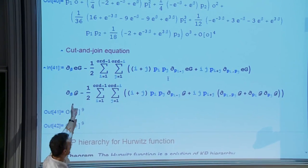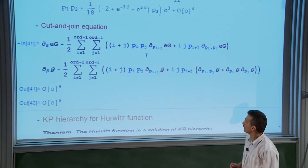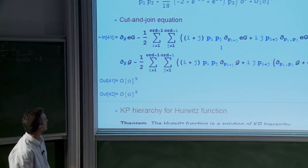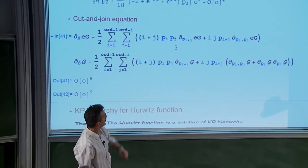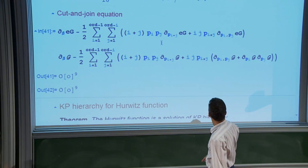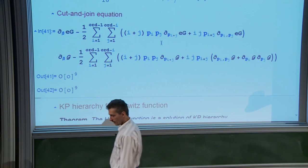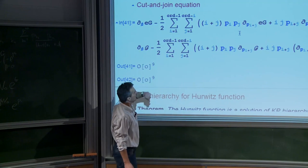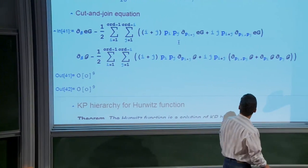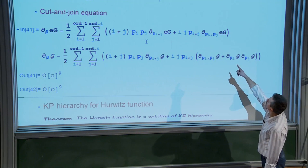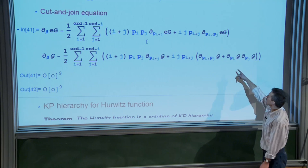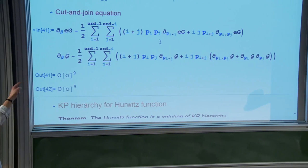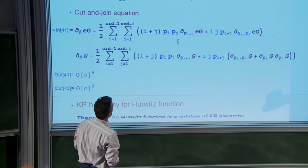This is the cut-and-join equation. In the first line I wrote the original cut-and-join equation, and I verified that my guess about the eigenvalues and eigenfunctions of this operator is correct. The first line is the cut-and-join equation for the exponential of the Hurwitz function. In the second line, I replaced the exponential of G by G itself. After this substitution, the equation is modified slightly: instead of a second partial derivative, a nonlinear term appears — the product of first-order partial derivatives.